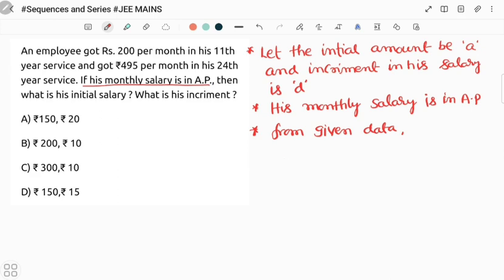Here it is 11th year service and got 495 rupees per month in his 24th year service. So a11 is equal to 200. Next, a24 equals 495 rupees.